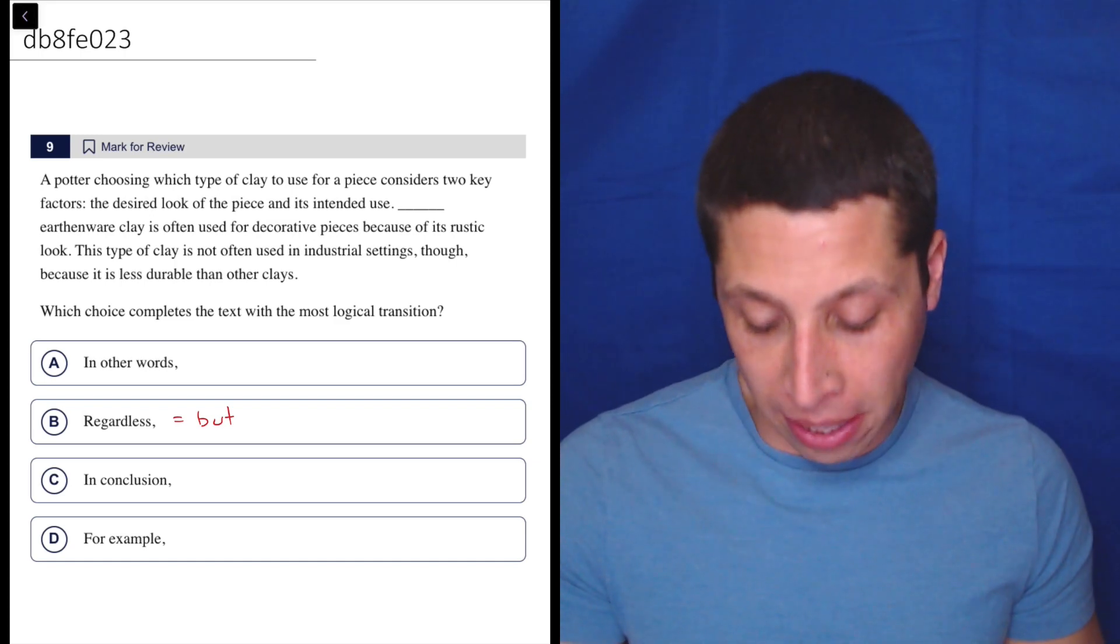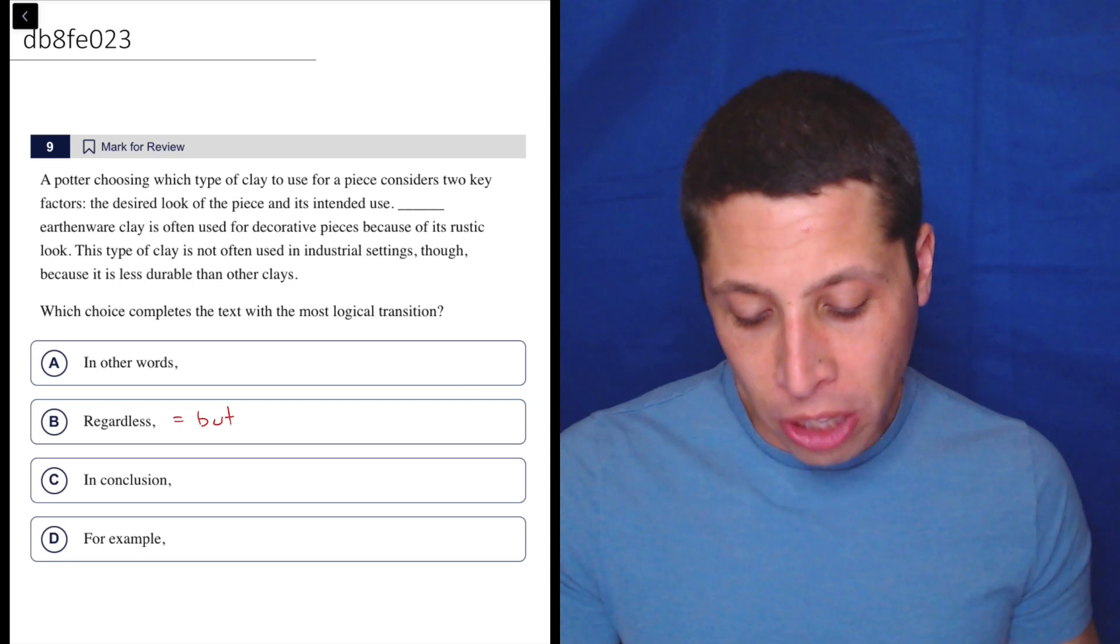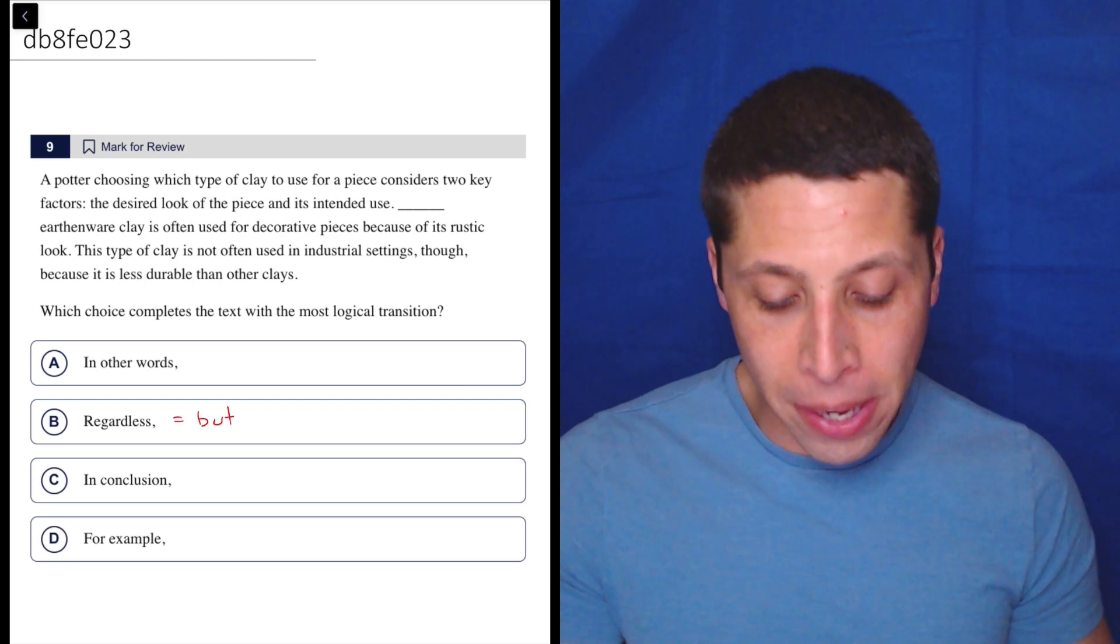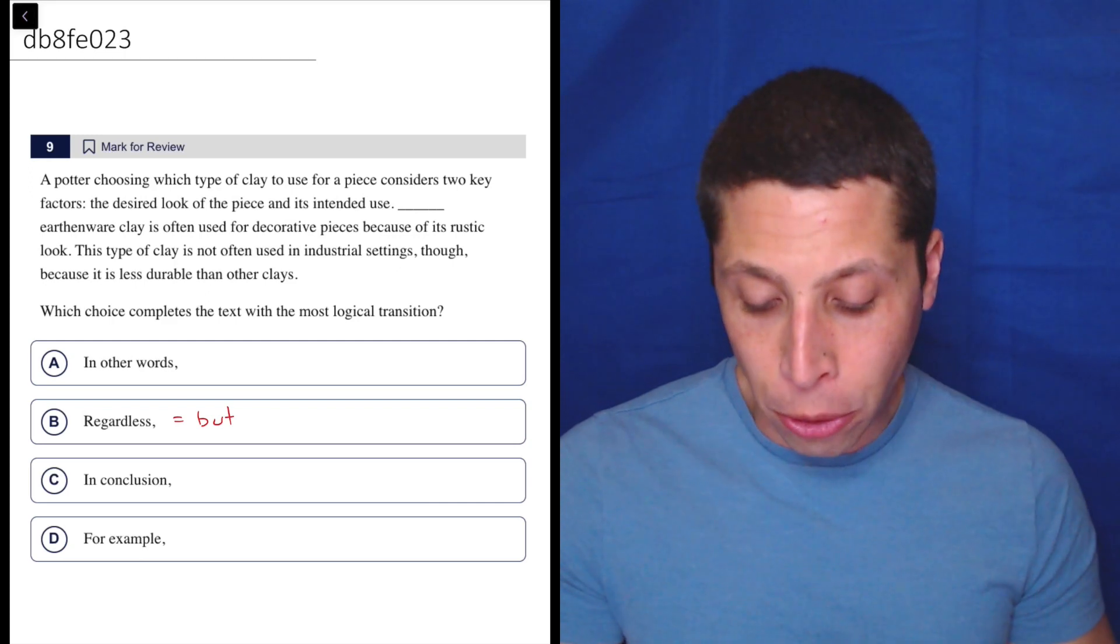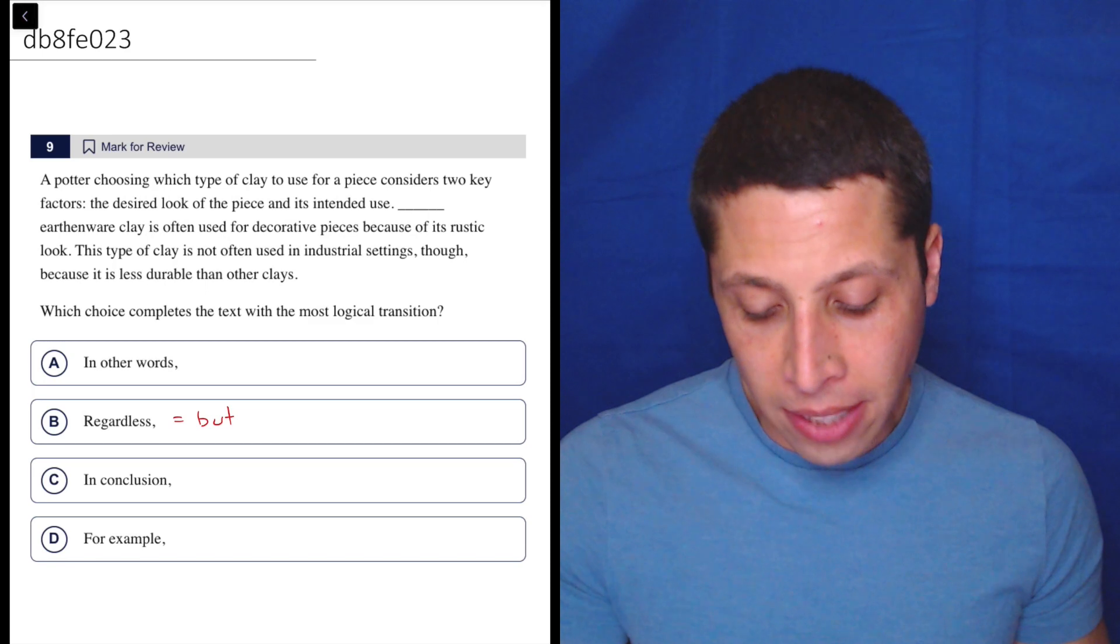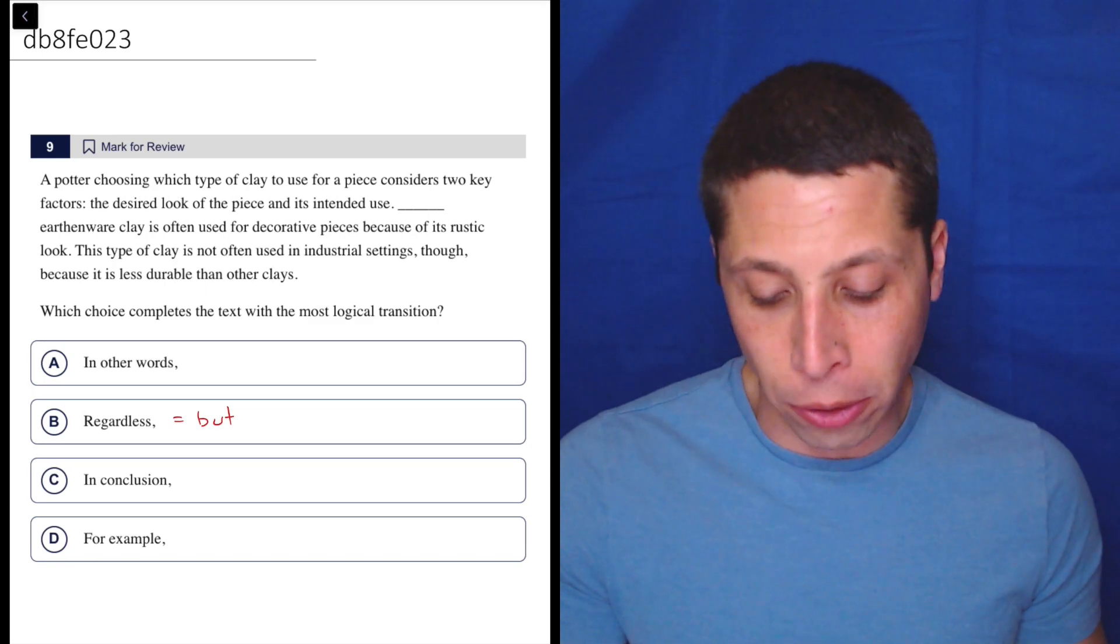But let's take a look and see what we can get from these sentences. A potter choosing which type of clay to use for a piece considers two key factors: the desired look of the piece and its intended use. Earthenware clay is often used for decorative pieces because of its rustic look. This type of clay is not often used in industrial settings though, because it is less durable than other clays.